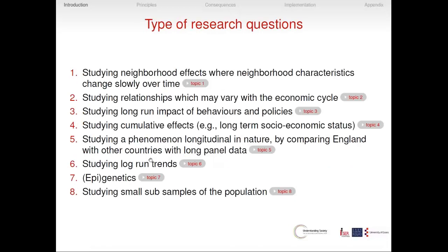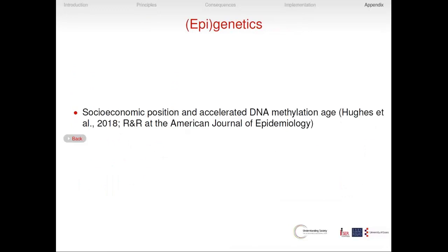Particularly exciting is the ability to carry out research on epigenetics. This is important because epigenetic data have been produced for the BHPS subsample, so for these people you have coverage from whenever they entered BHPS until now, and you also have genetic and epigenetic data. An example of this type of research is a paper on socioeconomic position and accelerated DNA methylation age.